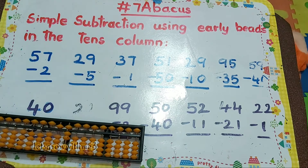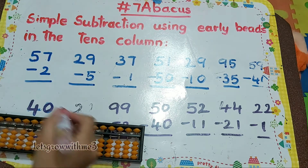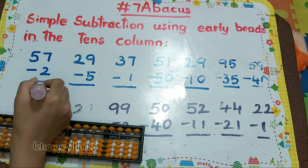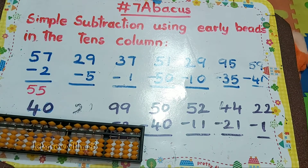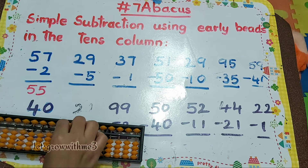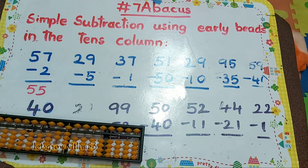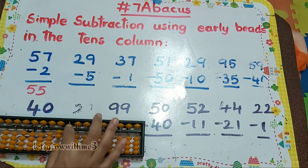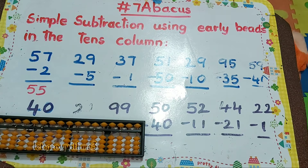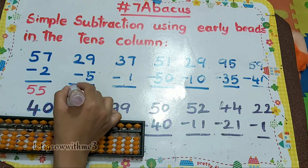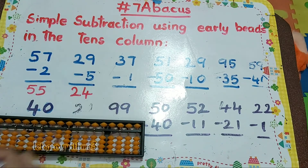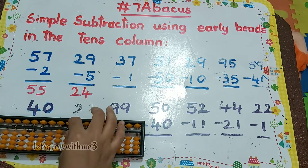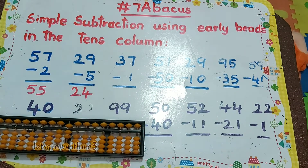57 minus 2, so our answer is 55. Next one: 29 minus 5, so our answer is 24. Next one: 37 minus 1.